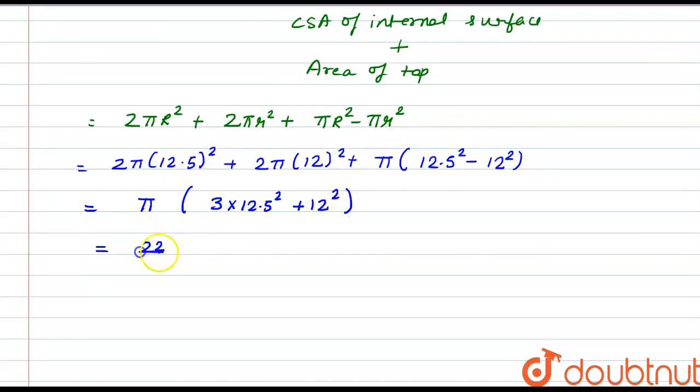This comes out to be 22/7, that is the value of π, into 3 × 12.5 square is 156.25, plus 12 square is 144. So this comes out to be 22/7 multiplied by 612.75.